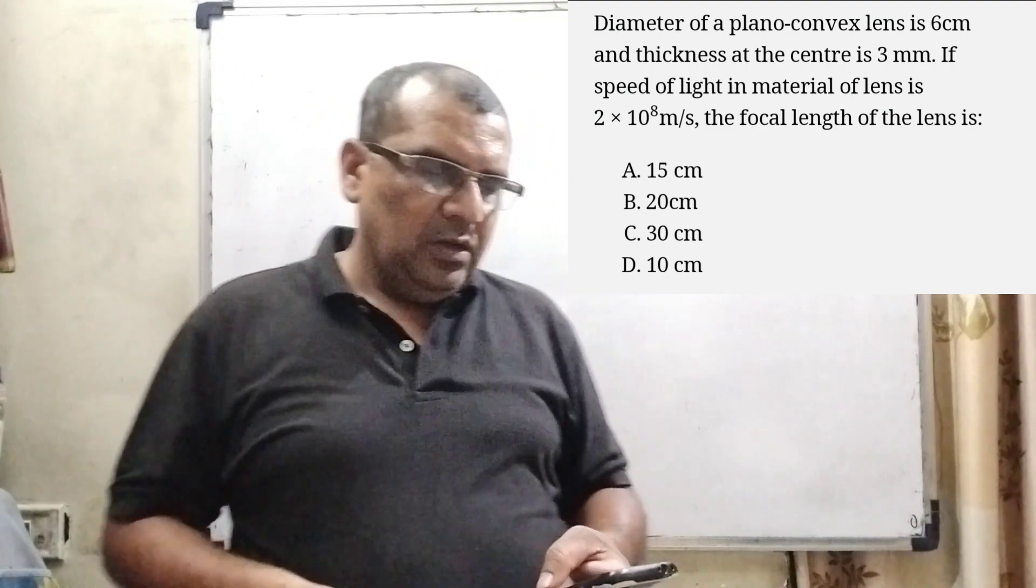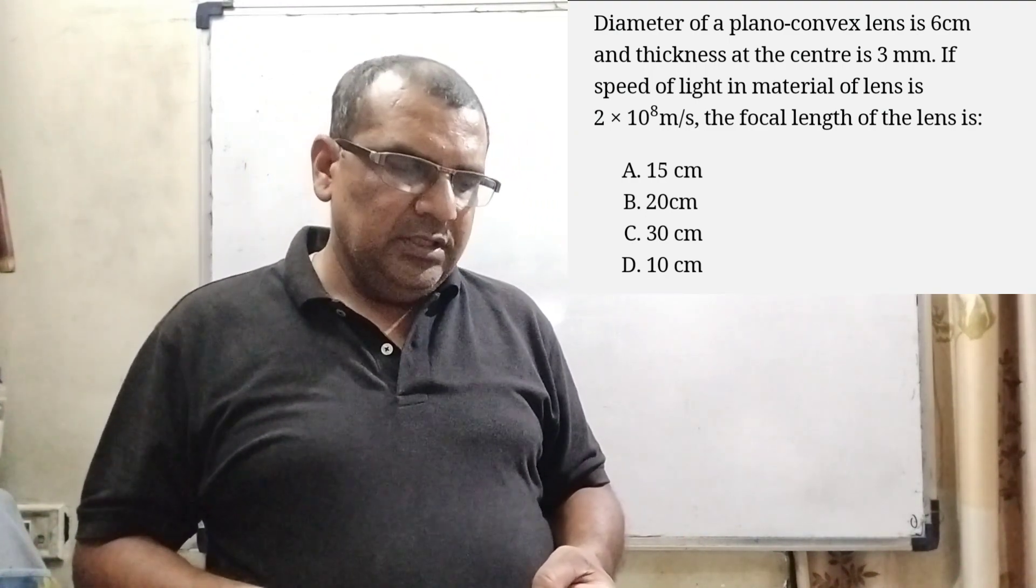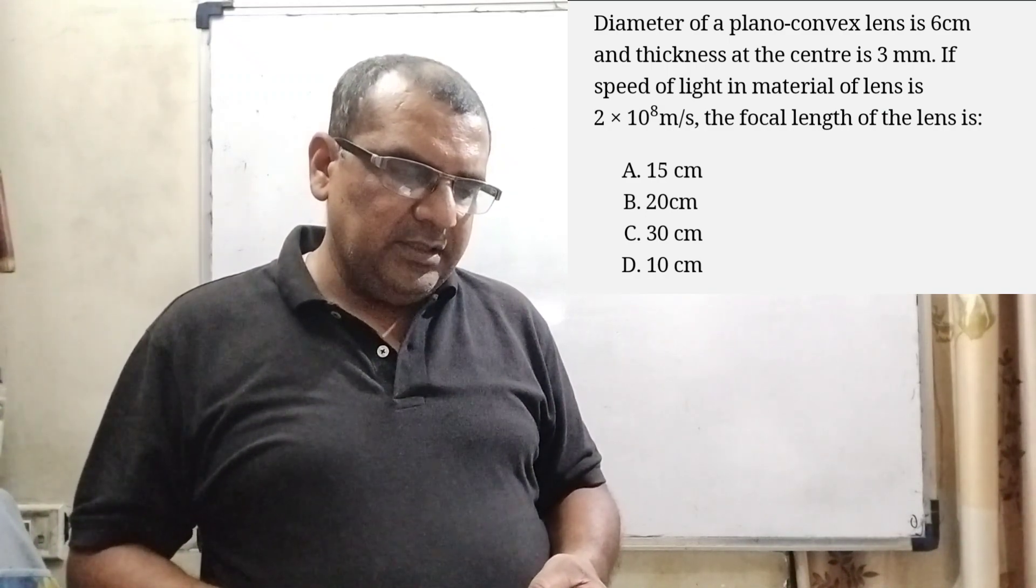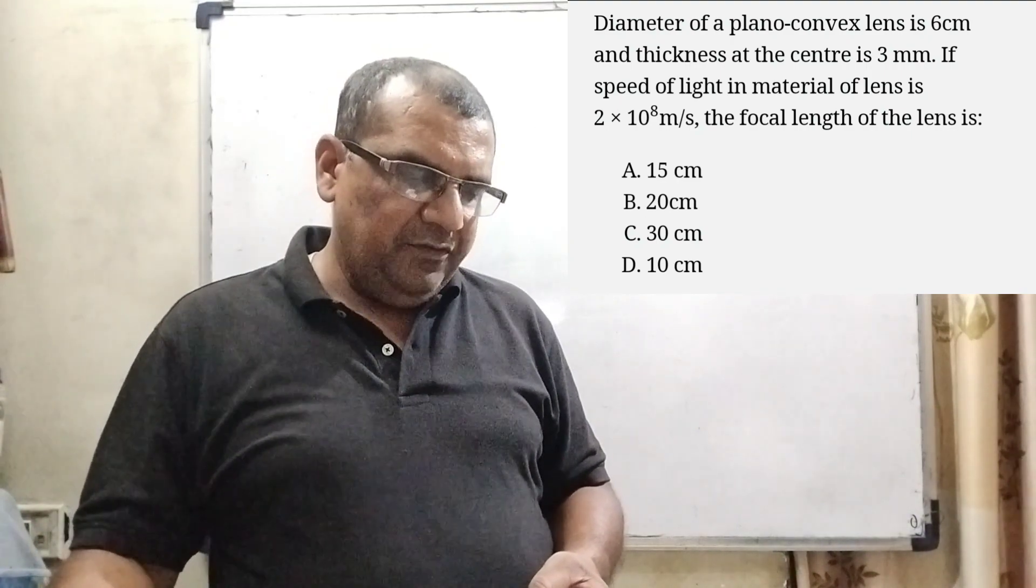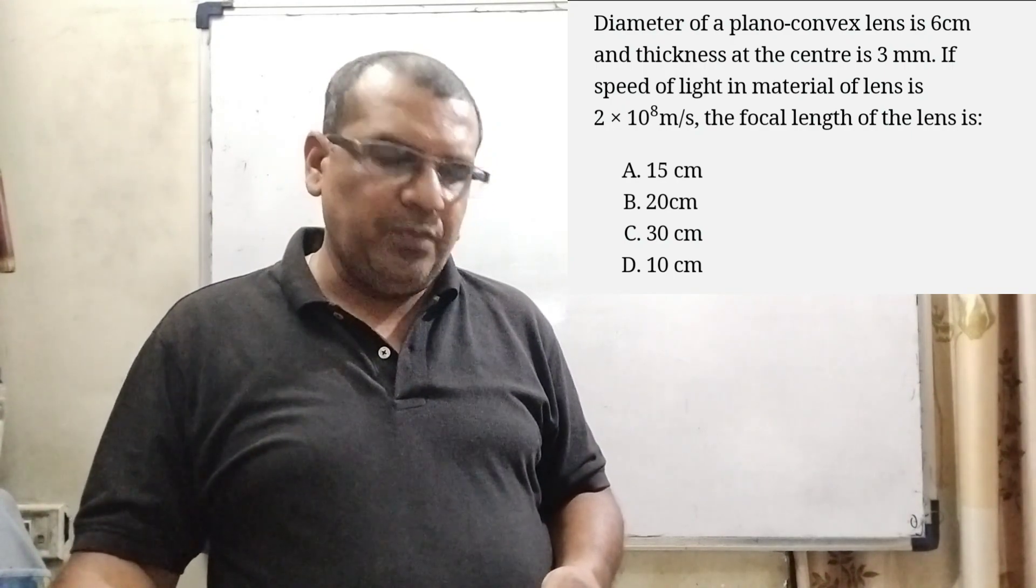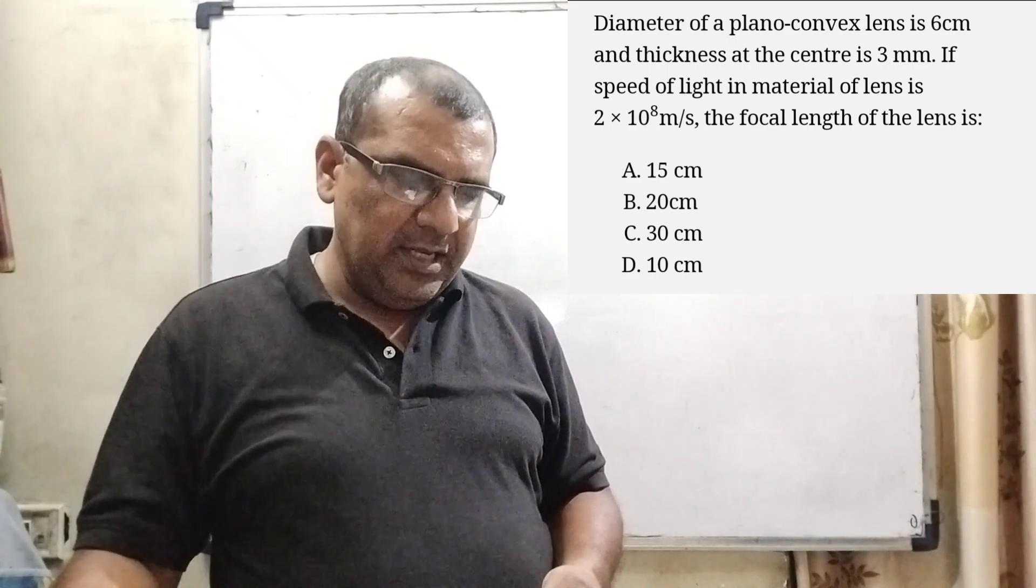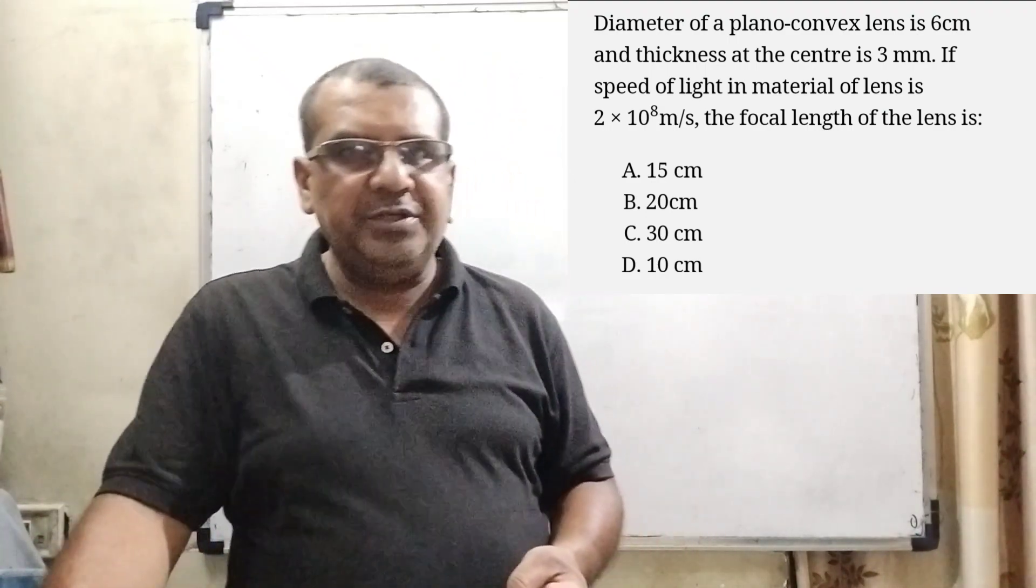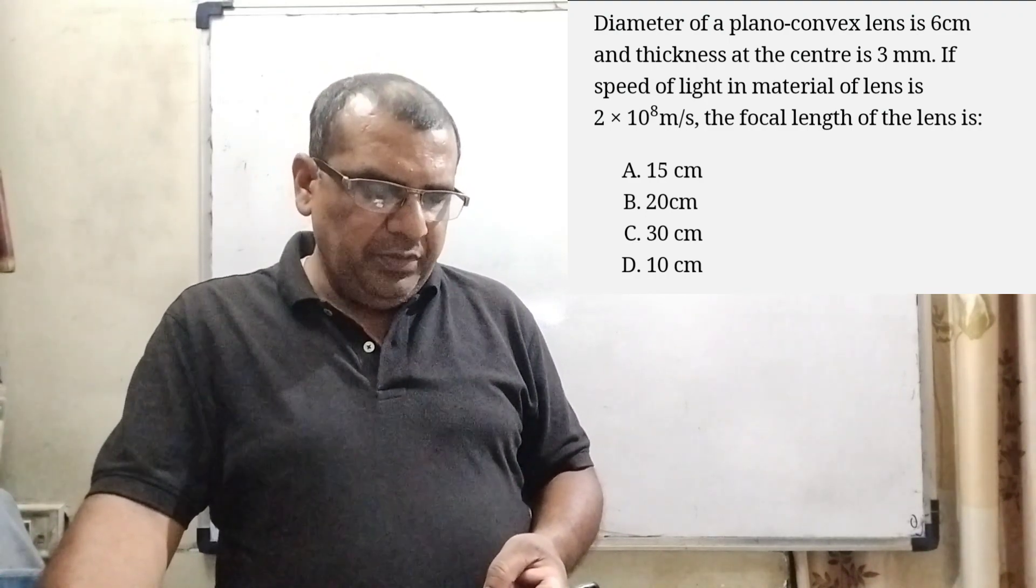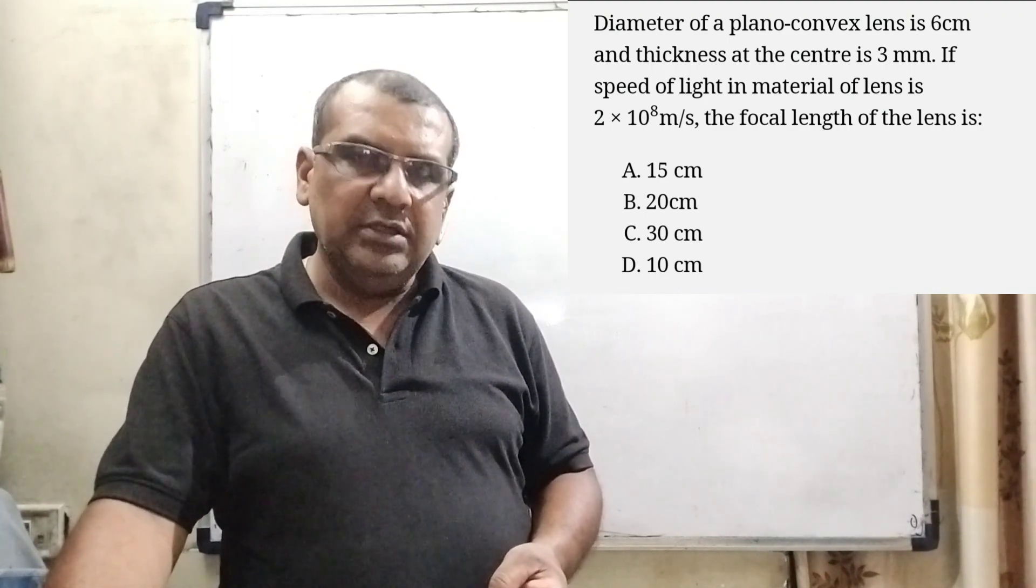Now here is the question. Diameter of a plano-convex lens is 6 cm and thickness at the center is 3 mm. Its speed of light in material of lens is 2×10^8 m/s. The focal length of the lens is. Here we have given 4 options: a) 15 cm, b) 20 cm, c) 30 cm and d) 10 cm.